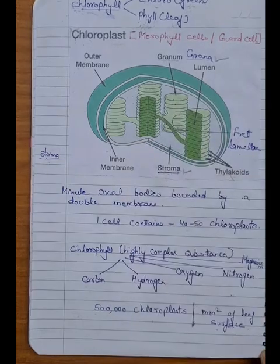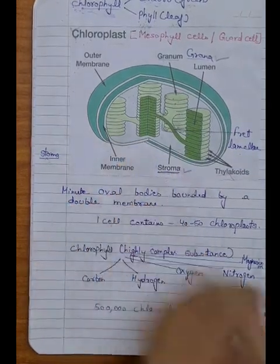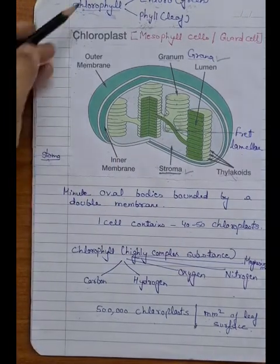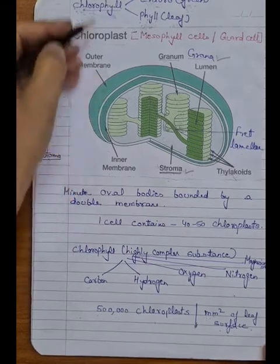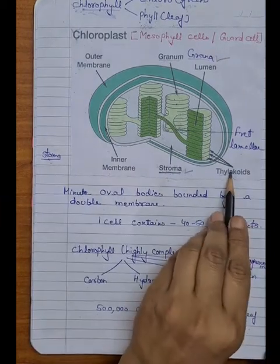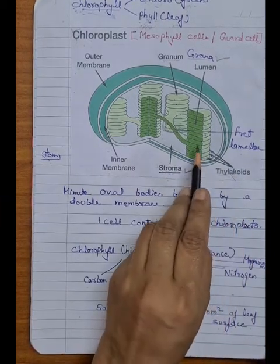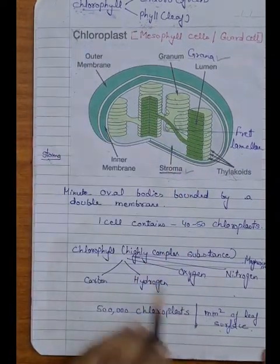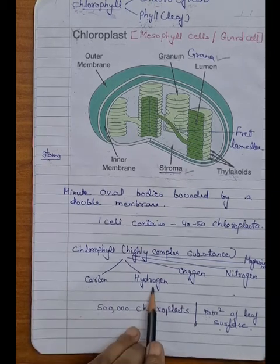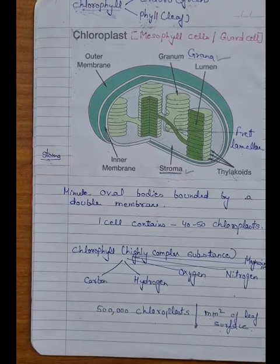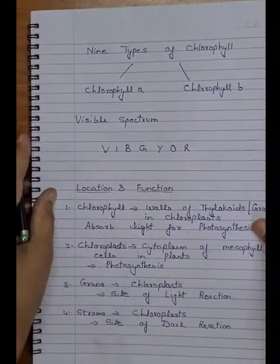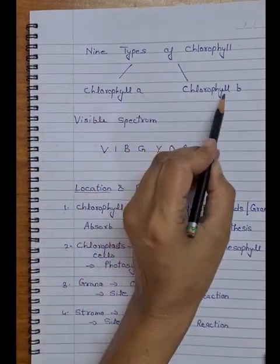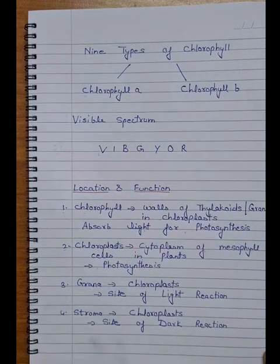Grana is the site of light reaction of photosynthesis, and stroma is the site of dark reaction — that's why both parts of the chloroplast are very important. Chlorophyll is present in the walls of the thylakoids. It is a highly complex substance composed of carbon, hydrogen, oxygen, nitrogen, and magnesium. There are mainly nine types of chlorophyll pigments in plants, but only chlorophyll A and chlorophyll B are the most abundant and most important for the process of photosynthesis.